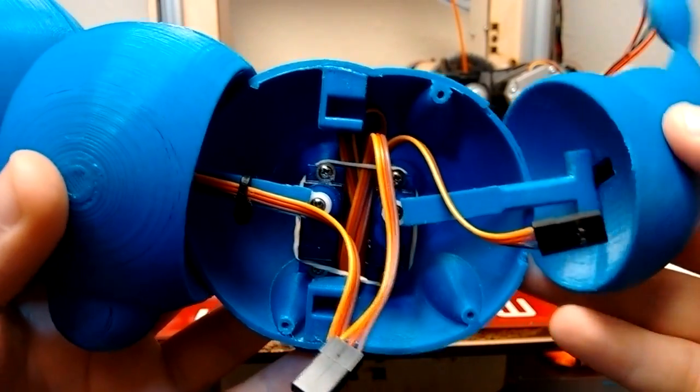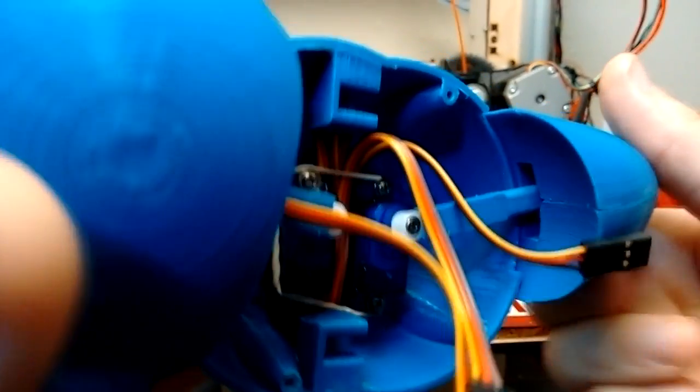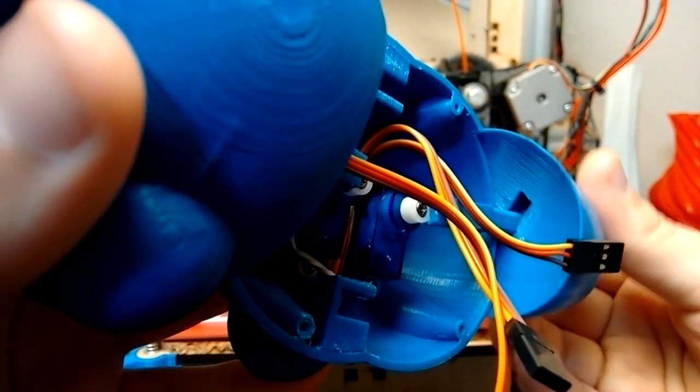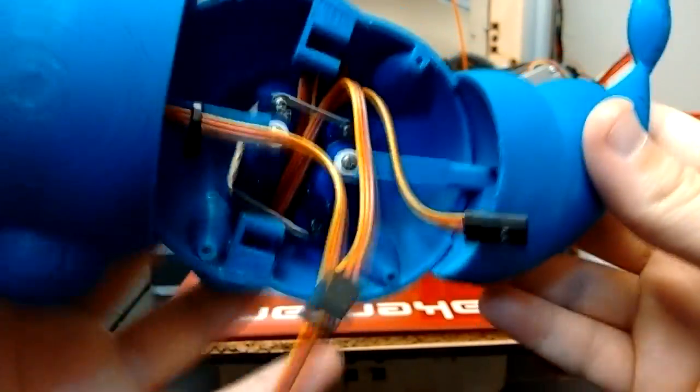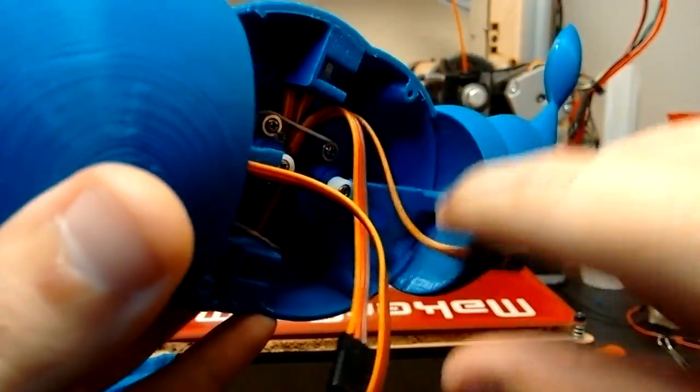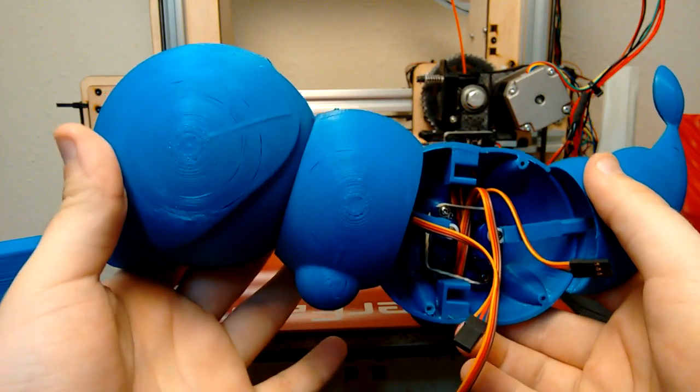With this exposed, you can see a little bit more about how the tail works. The tail just slides in and then allows it to rotate. So the main arm stays stationary and there's little slots cut into the inside here.